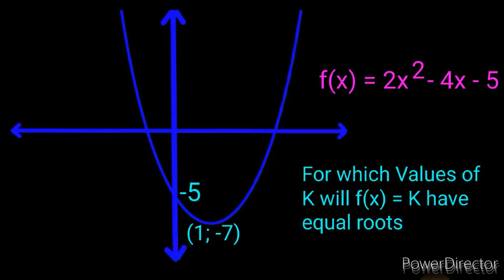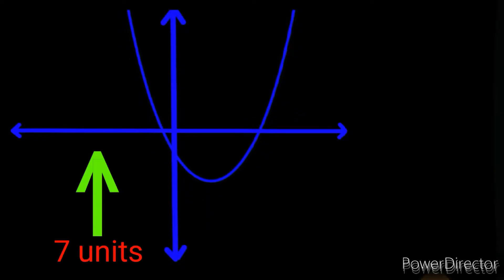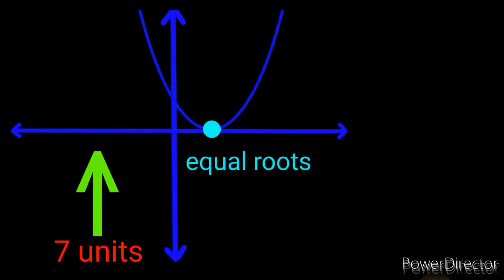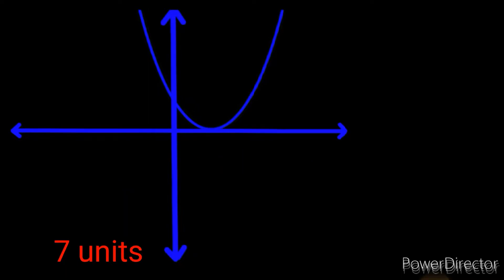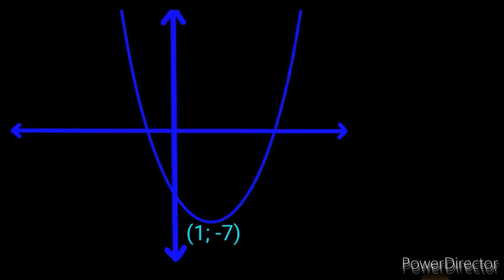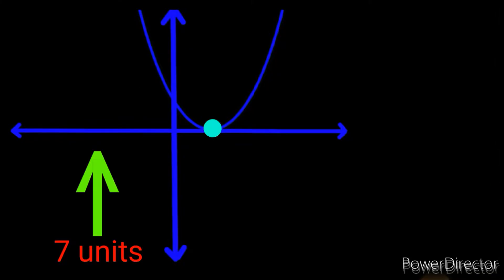Given that understanding, let's get back to the question. We have a y-intercept of -5 and a turning point of (1, -7). Whenever you encounter this type of question asking for equal roots, your attention must be on the y-value of the turning point, which is -7. Notice that if I shift this graph 7 units upwards, it now has one x-intercept — meaning it has equal roots. So the shift is positive 7.